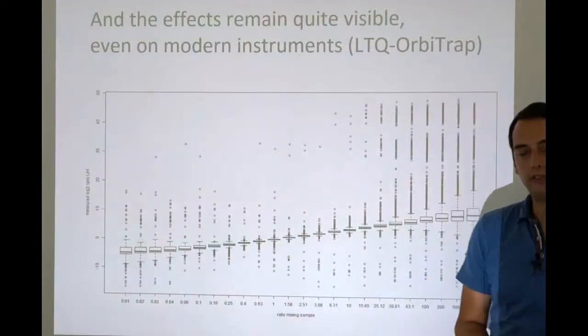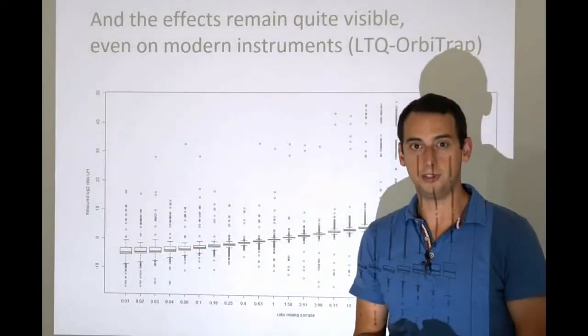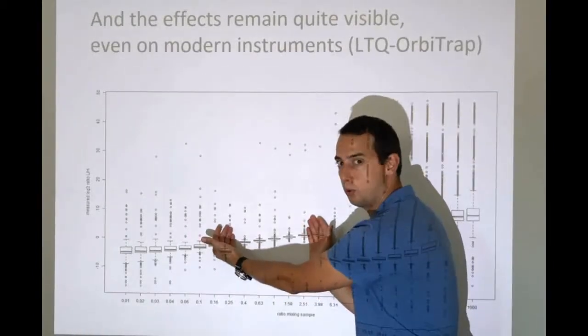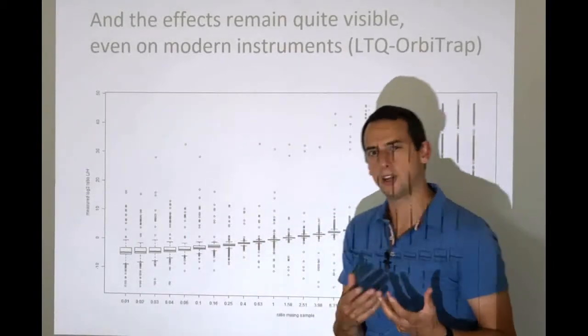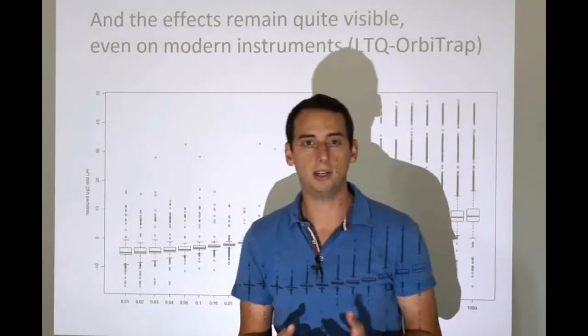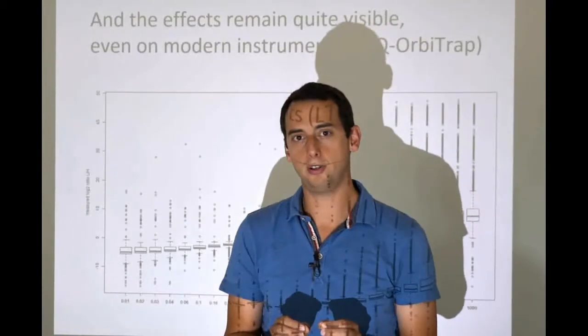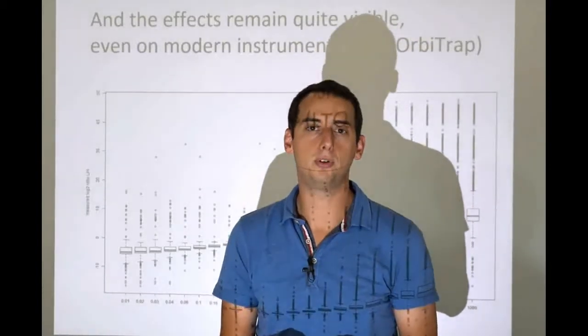So what this teaches you is that if you want to measure an absolute quantity, your spike in should ideally be close to 1 over 1, which is kind of counterintuitive and counterproductive in a way